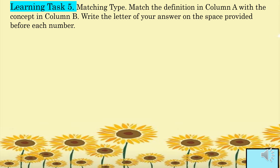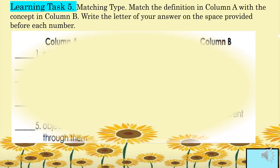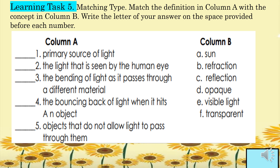For learning task five, this is a matching type. Match the definition in column A with the concept in column B. Column A: one, primary source of light; two, the light seen by the human eye; three, the bending of light as it passes through a different material; four, the bouncing back of light when it hits an object; five, objects that do not allow light to pass through them. Column B: A — sun; B — refraction; C — reflection; D — opaque; E — visible light; F — transparent.